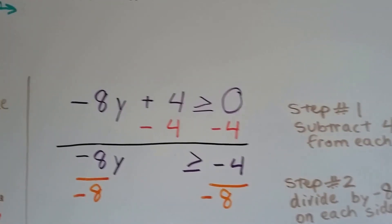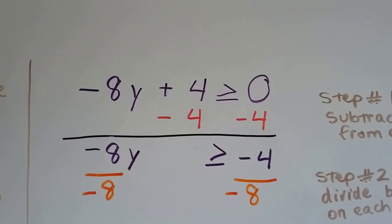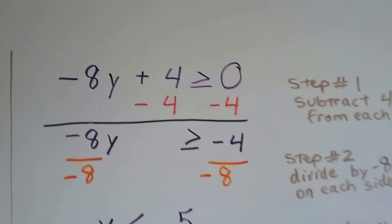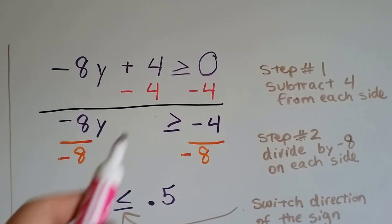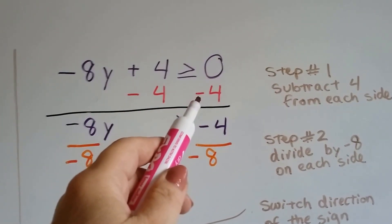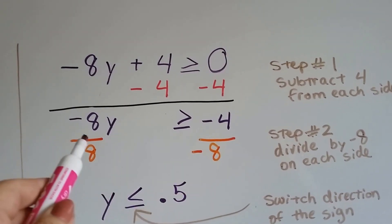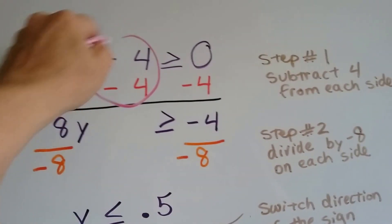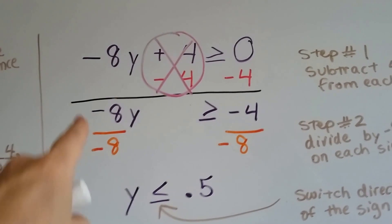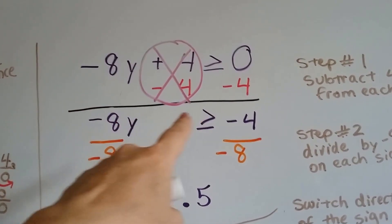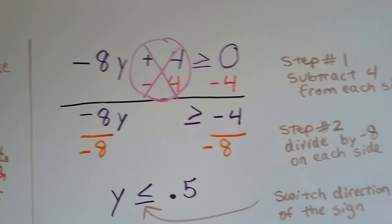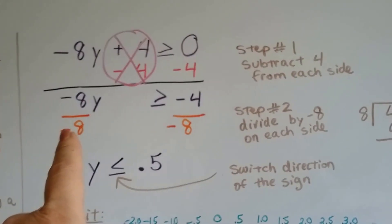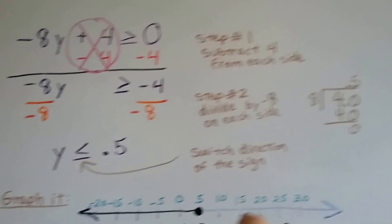Alright, let's take a look at this one. We have negative 8y plus 4 is greater than or equal to 0. So step 1 is to subtract 4 from each side, and we do. And 0 take away 4 is negative 4. This created a 0 pair and it got rid of it, didn't it? It eliminated it. So now we just have negative 8y is greater than or equal to a negative 4.